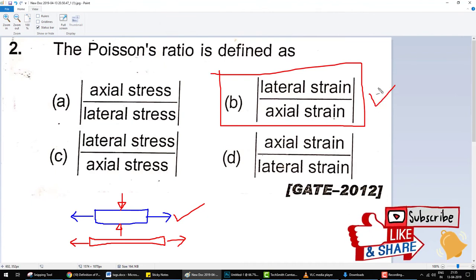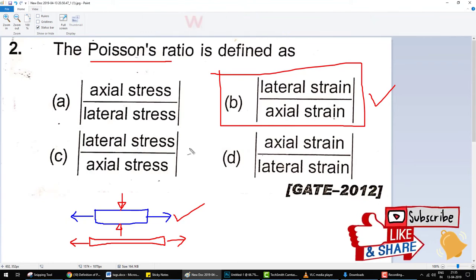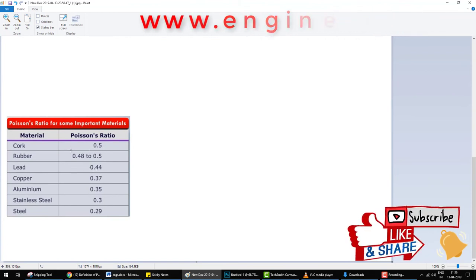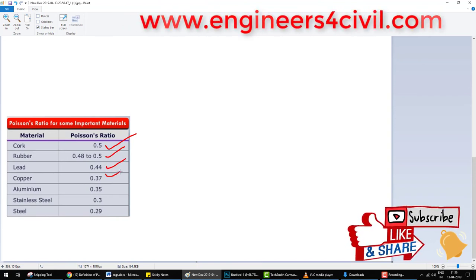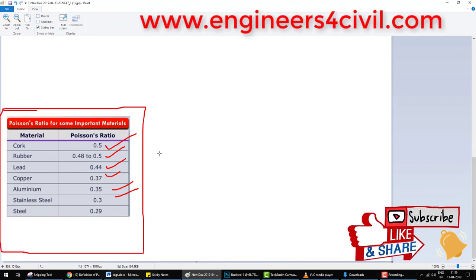The Poisson ratio of different materials: for cork is 0.5, for rubber is 0.48 to 0.5, for lead is 0.43, for copper is 0.37, for aluminum is 0.35, and for stainless steel is 0.3, and for steel is 0.29. These are the different values of different material Poisson ratios.